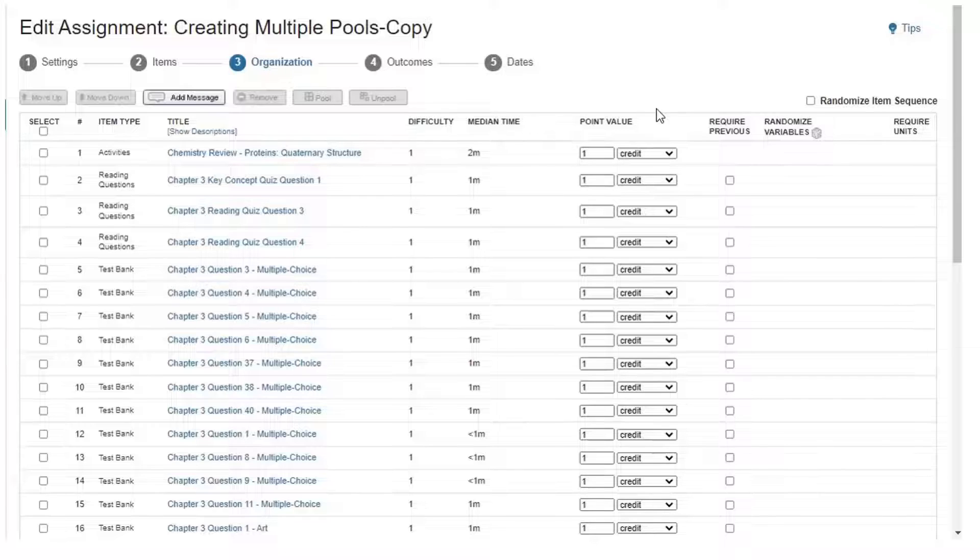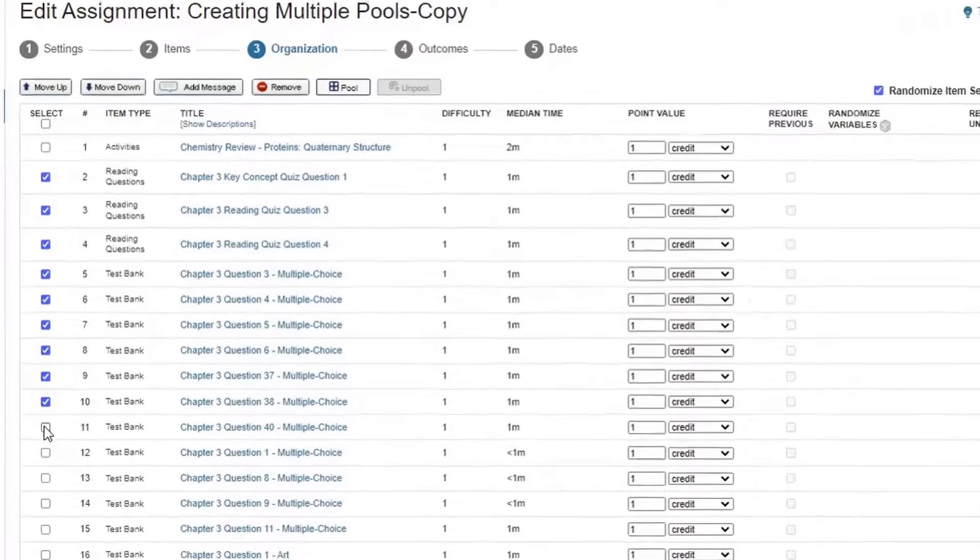To discourage answer sharing even further, select Randomize Item Sequence and Randomize Variables. To create your first pool, select Items, then select Pool.